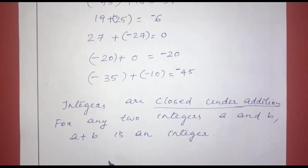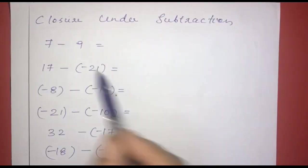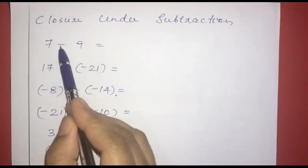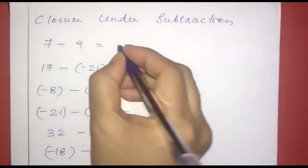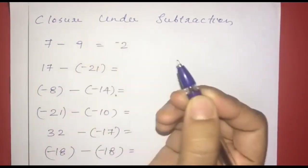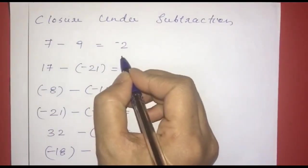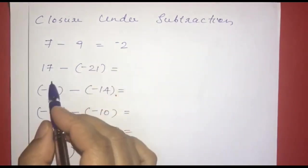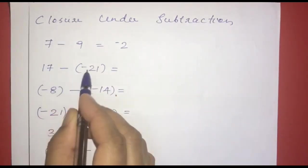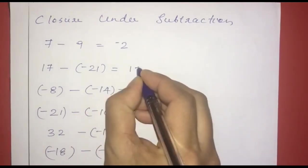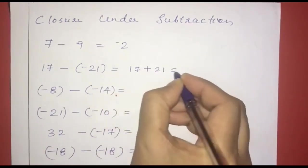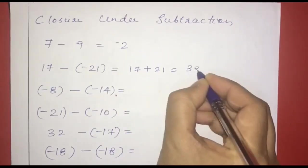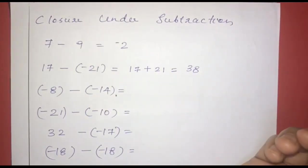We will also look at closure under subtraction. Seven minus nine: nine is larger, so nine minus seven gives a negative result. Negative 2. Negative 2 is an integer. Next: 17 minus negative 21. The two negatives make a positive, so 17 plus 21 equals 38. Thirty-eight is an integer.